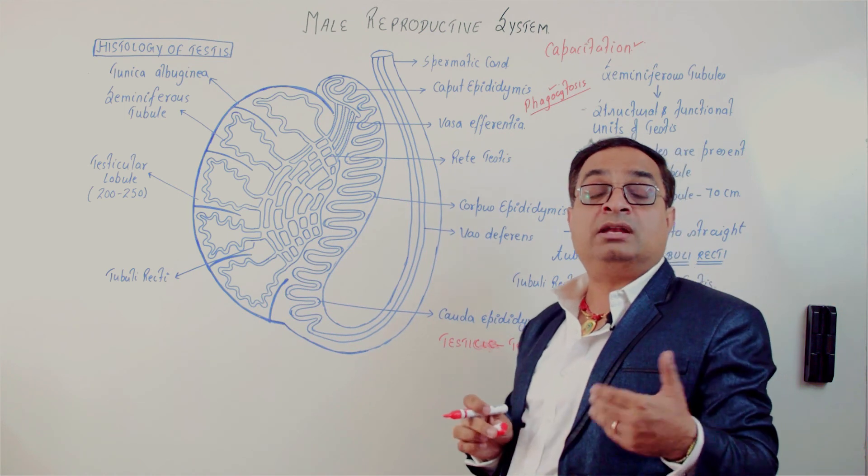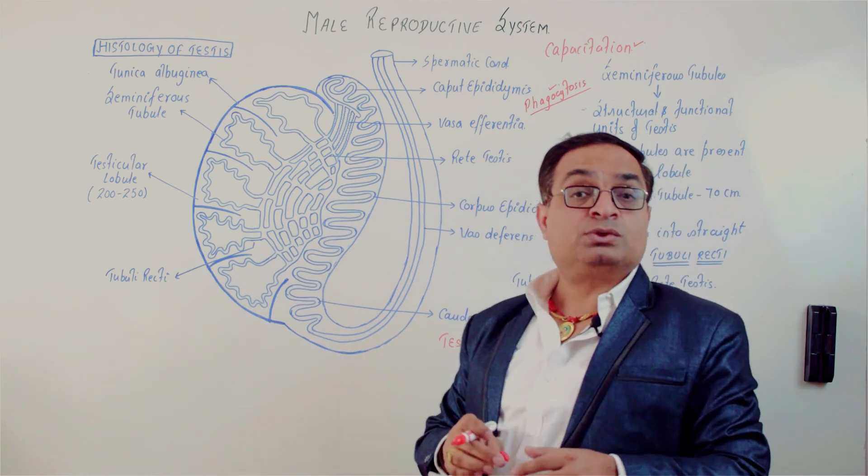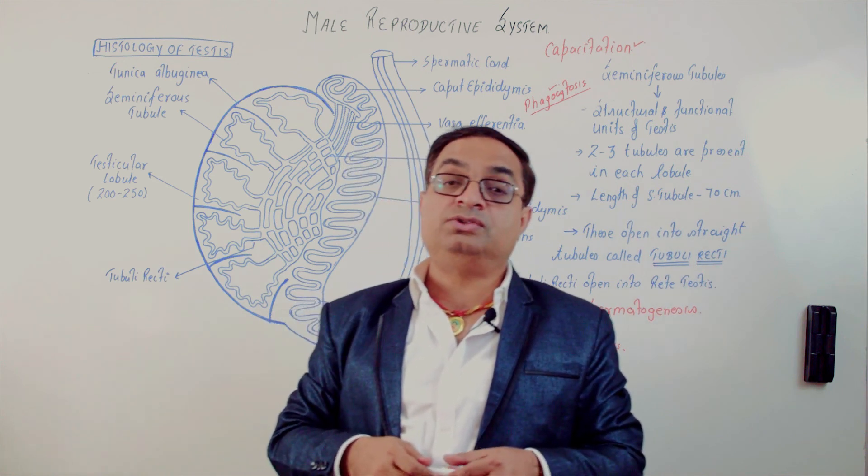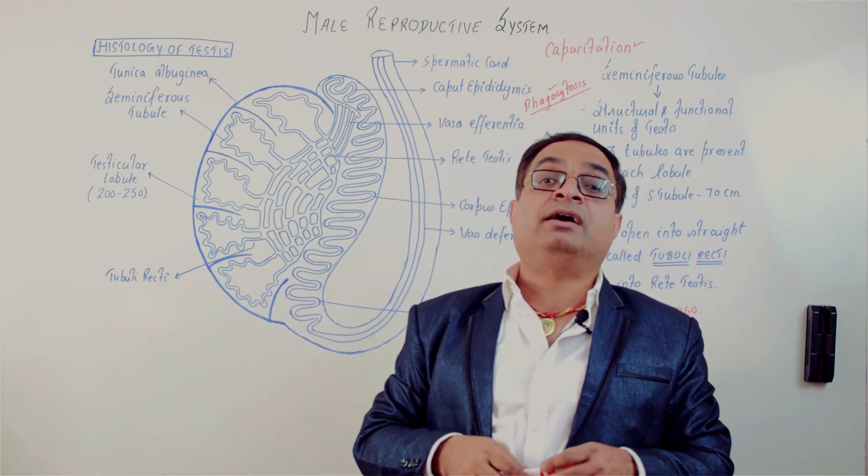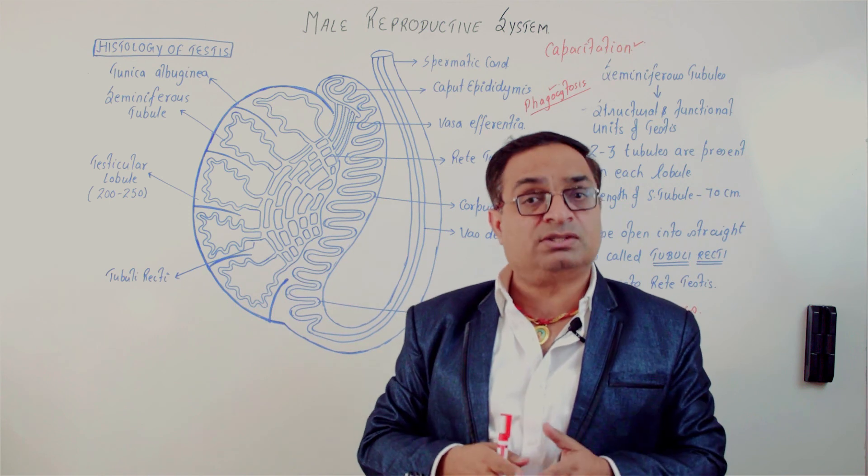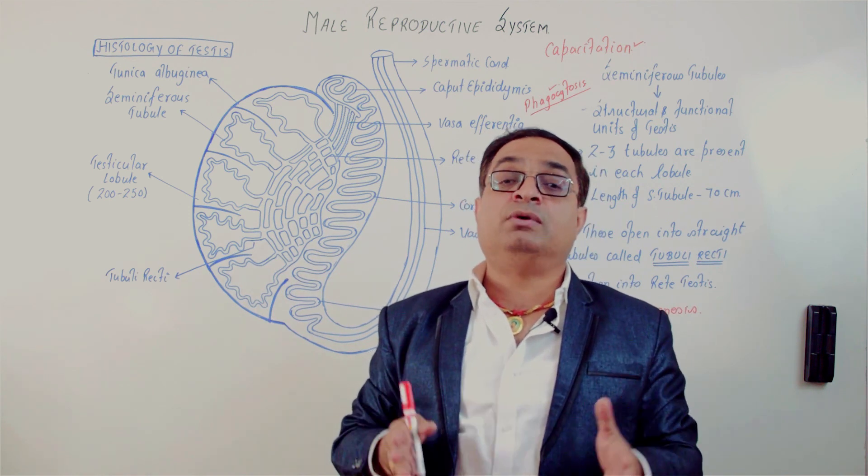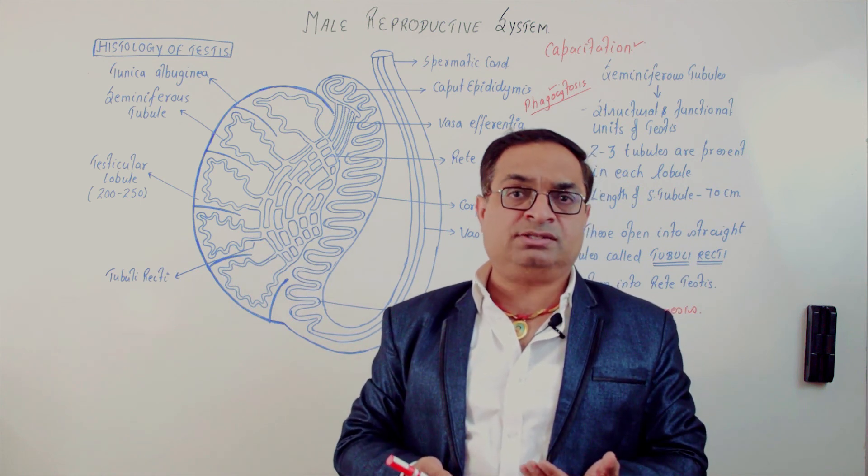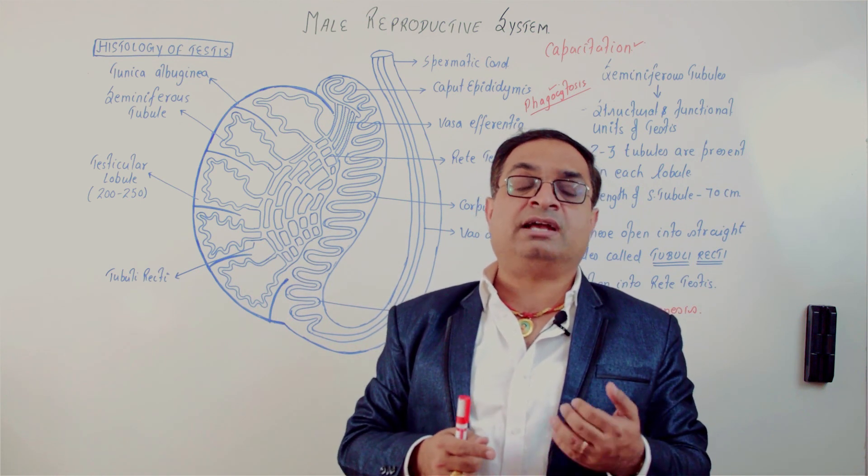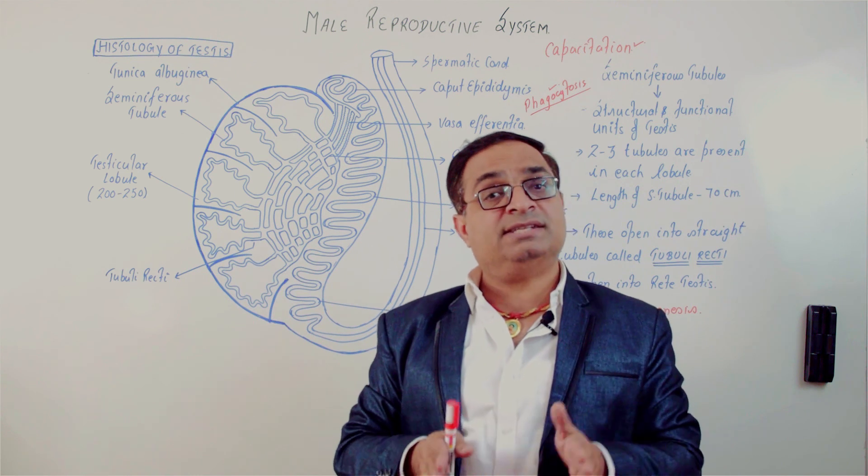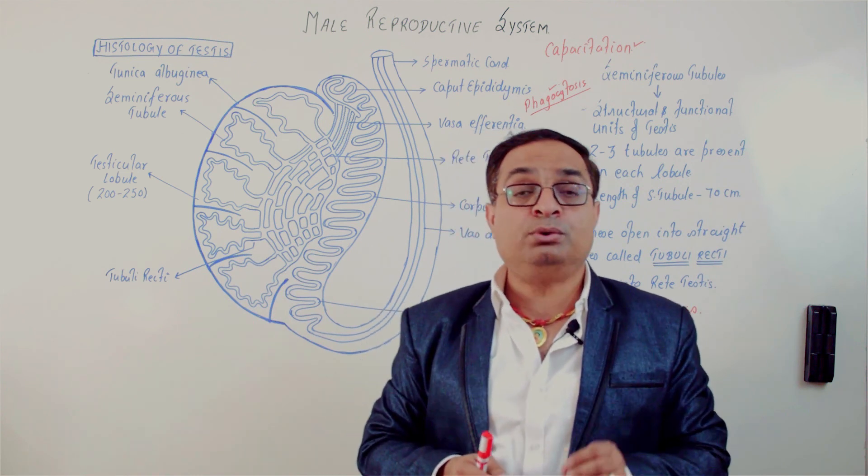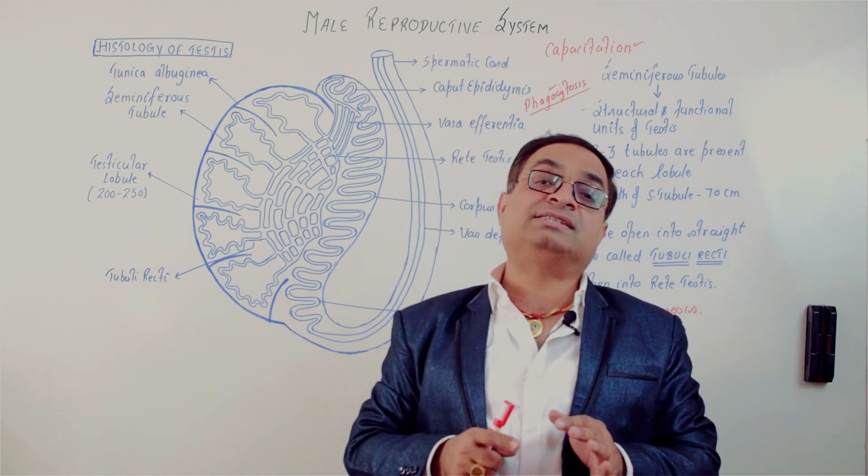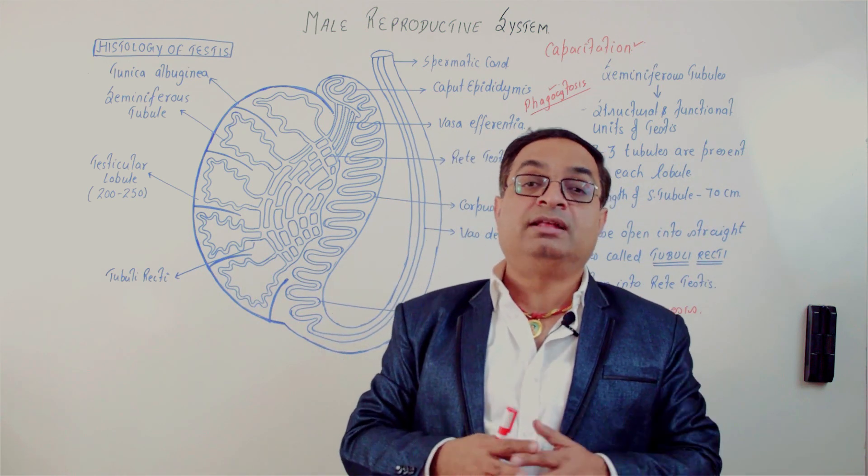So that was about the sagittal section of the testes or the histology of the testes. In our next session we'll discuss the transverse section of testes. We'll discuss the enlarged view of a seminiferous tubule, what all different cells are present inside the tubule, that is Sertoli cells and spermatogonia. Outside the seminiferous tubule, hormone-producing Leydig cells or interstitial cells are present. So we'll discuss about these cells in the forthcoming lectures.